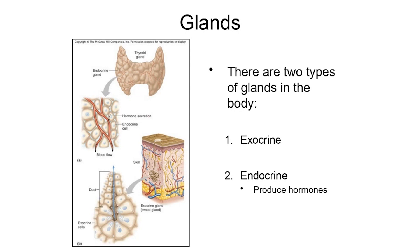If you look at this diagram of the skin, you'll notice there is a little sweat gland sitting down in the skin and there is a duct that comes off of it. The sweat gland produces the sweat, releases it into the duct, and the duct transports that sweat to where the body needs it — which is on the surface of the skin.